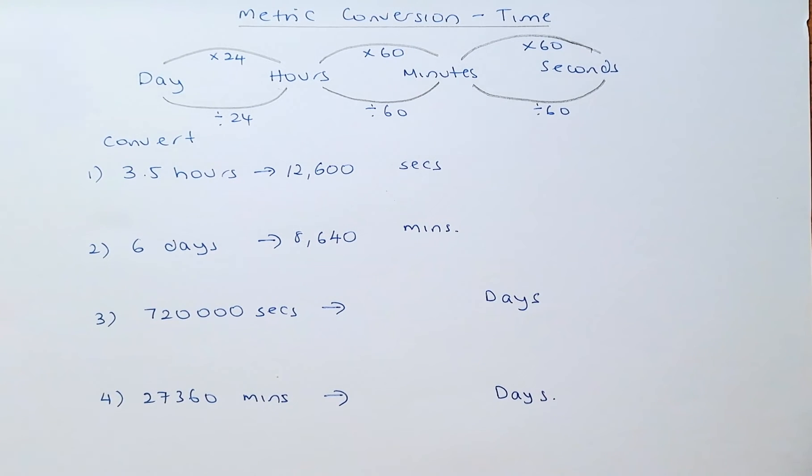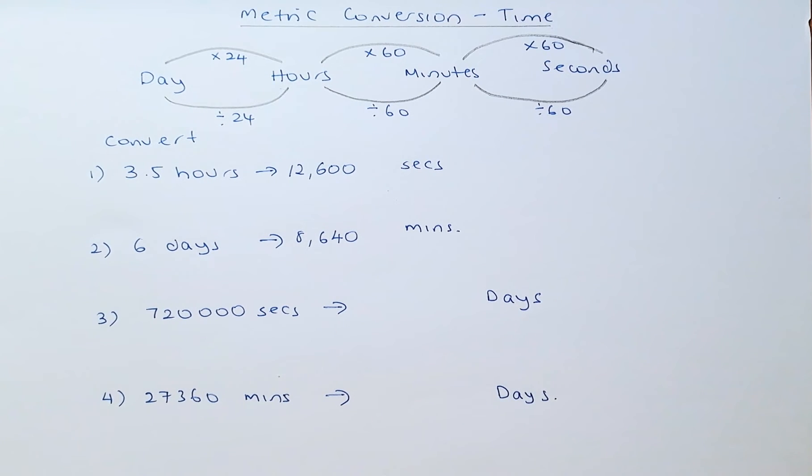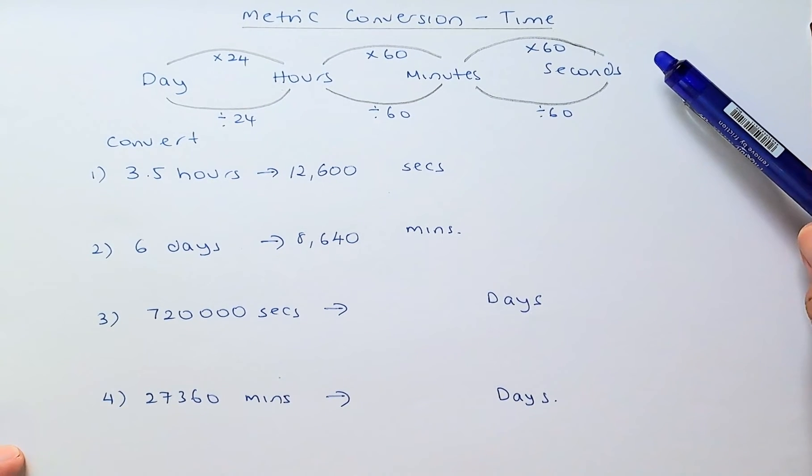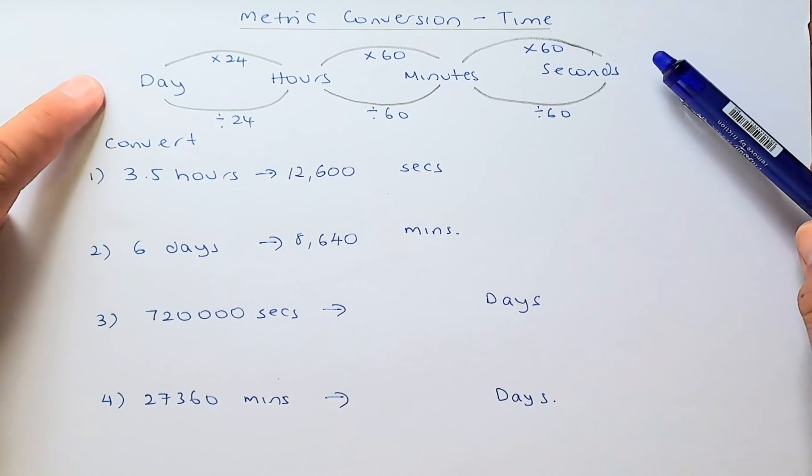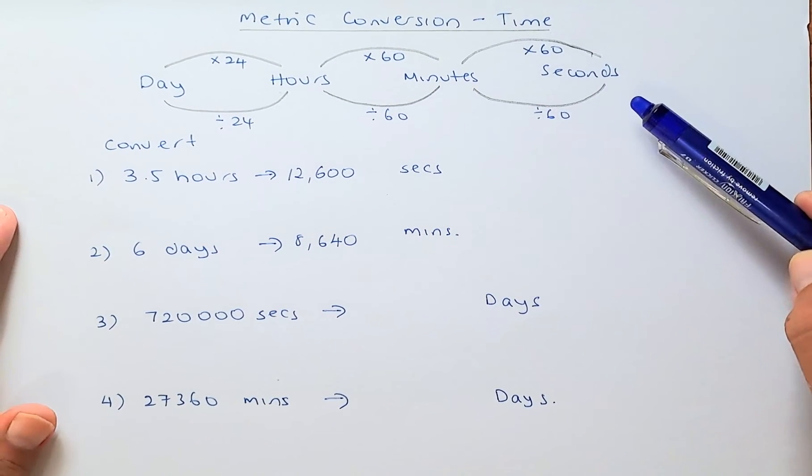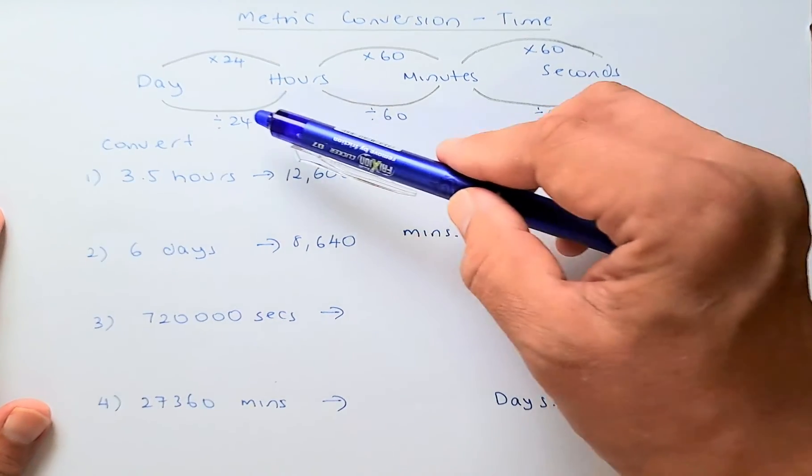Now we are going to do the reverse. We are going from the right to the left. So now we are going to calculate what is 720,000 seconds in terms of days. We are here now and we are going to move to the end here. So from seconds to days, what do you think you do? You need to divide by 60, followed by divide by 60 and you divide by 24.